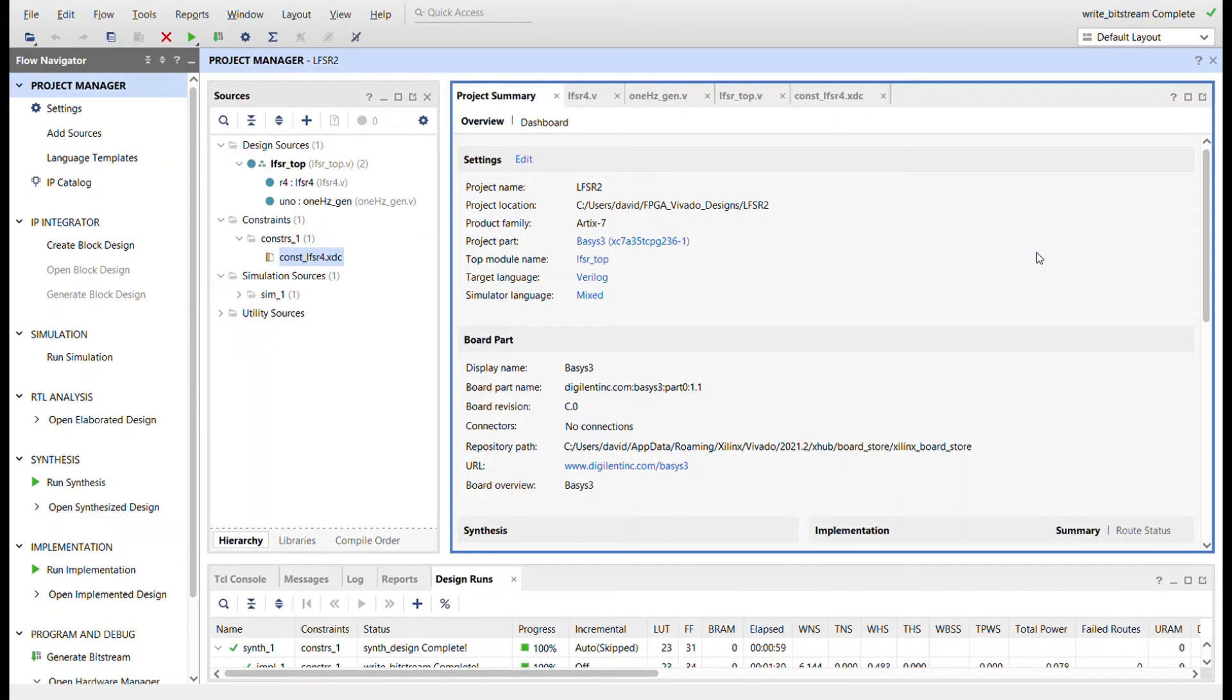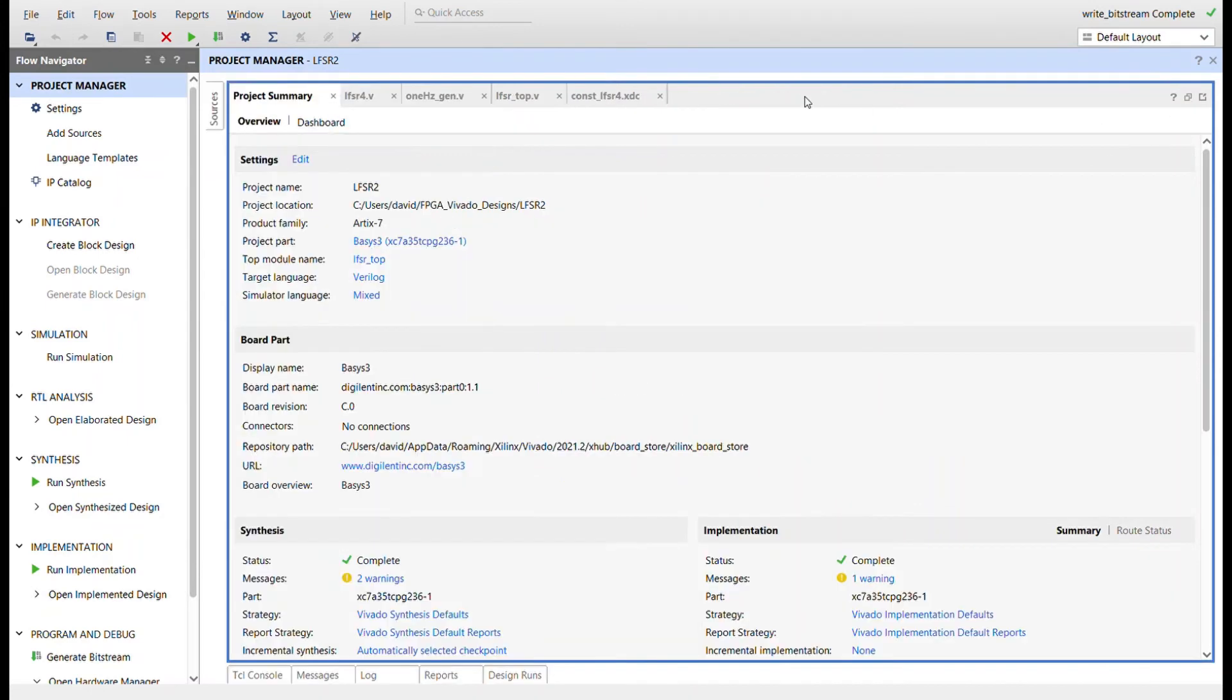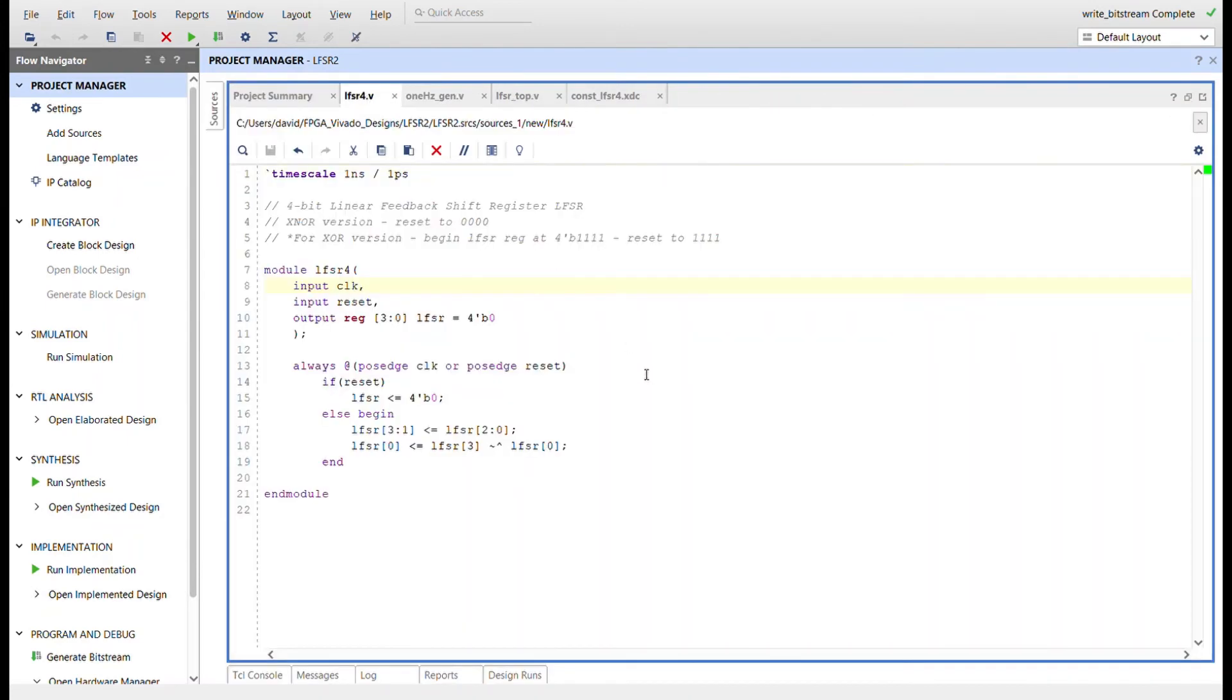Okay, here I am in Vivado. I've got a Basys 3 project with target language of Verilog. Here's the module hierarchy over here. I'm using a 1 Hertz generator, just like I did with the Johnson counter, just to slow it down so we can see the LFSR count.